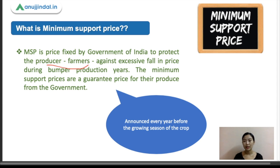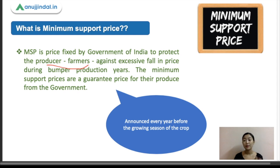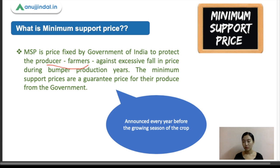These are support prices or minimum prices beyond which the market price cannot fall. This minimum support price is a form of market intervention by the Government of India to ensure agricultural producers against a sharp fall in farm prices. MSPs are announced by the Government of India at the beginning of the sowing season for certain crops, based on the recommendation of the Commission for Agriculture Costs and Prices, also known as CACP.